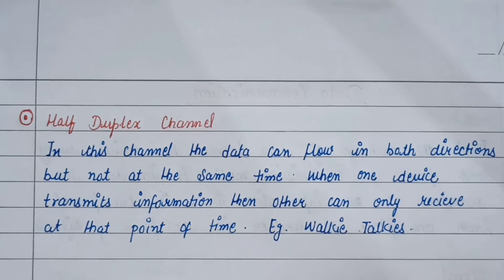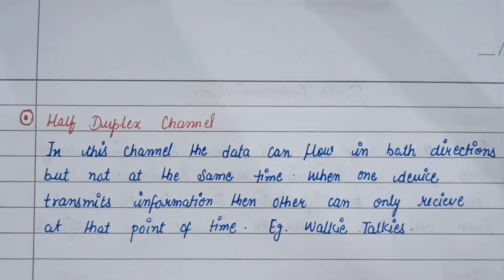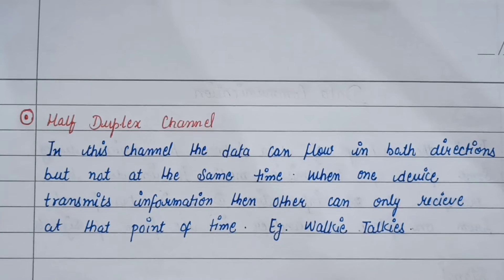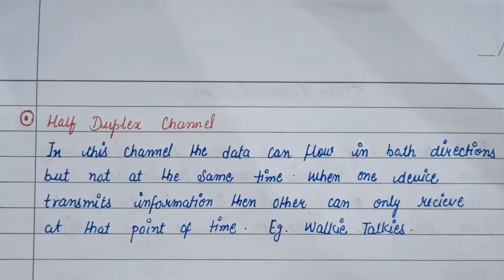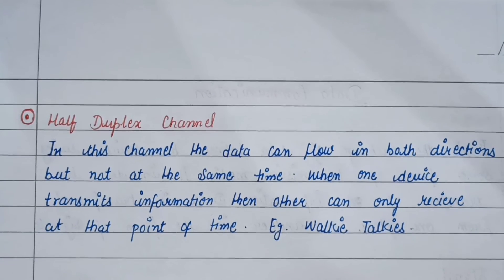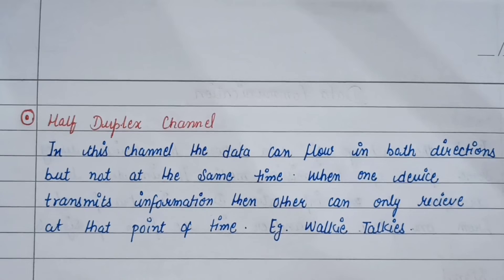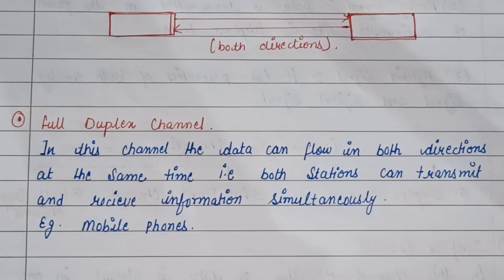Second channel hai half-duplex channel. In this channel, the data can flow in both directions, but not at the same time. Is channel mein jo data hai, wo dono directions mein flow karta hai, par same time pe nahi. When one device transmits information, the other can only receive at that point of time. For example, walkie-talkie. Iske diagram mein hum dekh sakte hain ki jo data hai, wo dono directions mein flow kar raha hai.